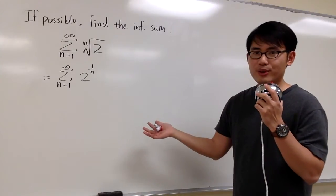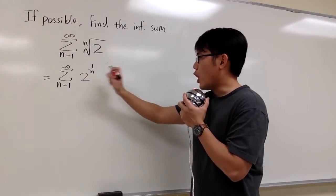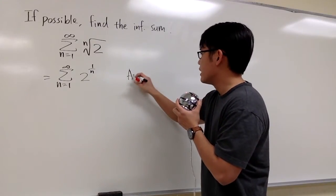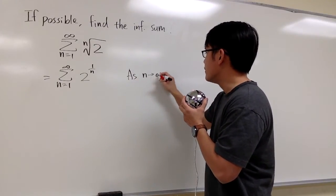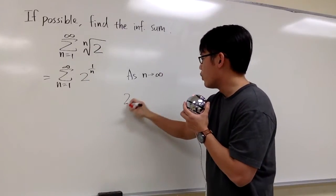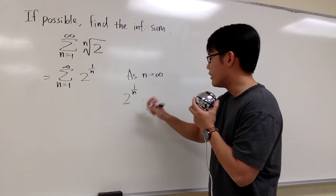How can we approach this though? Well, in this case, we should always see, whenever we have something that we encounter, let's just go ahead and check the limit as n goes to infinity, what will happen to this expression? Let's write down 2 to the 1 over n power.